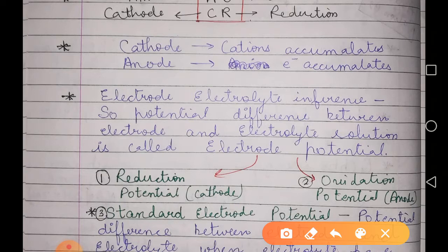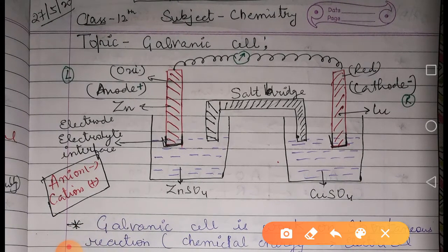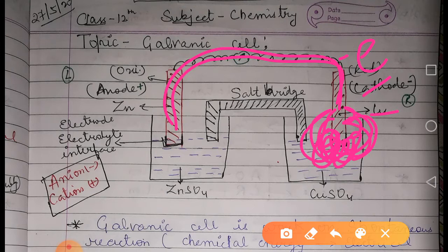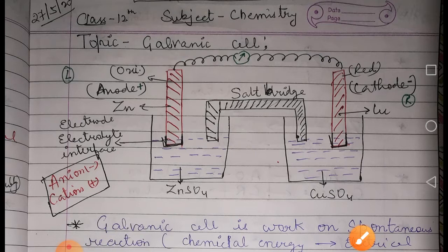The cathode accumulates cations and the anode accumulates electrons. Zinc transfers its electrons to the electrode; since these electrons are negatively charged, the electrode becomes negatively charged. The Cu²⁺ cations are attracted and start collecting on the cathode — this is called the accumulation of cations, since Cu²⁺ is a cation.